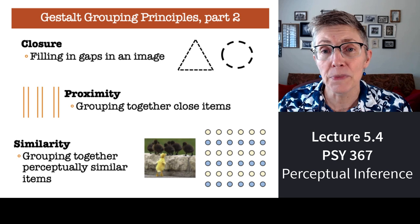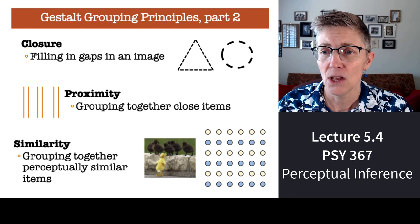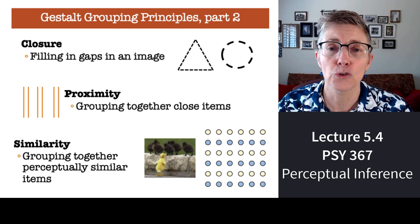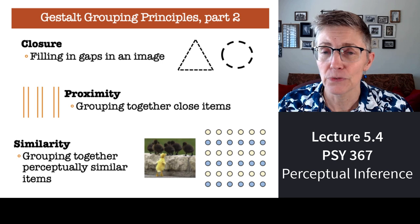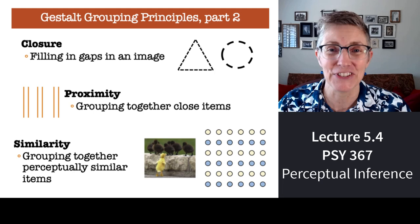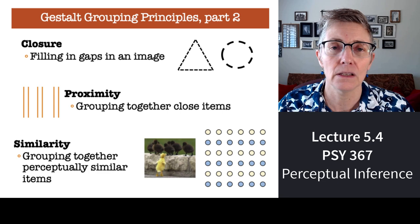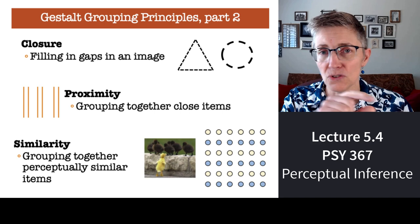We group things together if they're near each other — the Gestaltists call this the rule of proximity. Things that are close together tend to be grouped together. In the drawing next to the word 'proximity,' you might see three pairs of lines grouped together. We also group by similarity. On a basketball team, people wear the same color jersey because it's easy to group them as a team. In the drawings here, you can see a row of yellow circles and a row of blue circles grouping together by similarity.